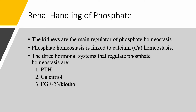How do the kidneys handle phosphate? The kidneys are the main regulators of phosphate homeostasis, and phosphate homeostasis is linked to calcium homeostasis because they share the same hormonal systems. There are three hormonal systems that regulate phosphate homeostasis: parathyroid hormone (PTH), calcitriol (1,25-dihydroxyvitamin D3), and fibroblast growth factor 23 (FGF23) with its co-receptor klotho.